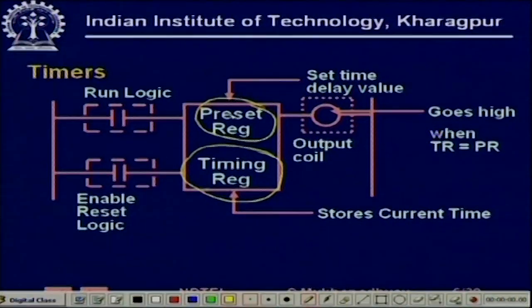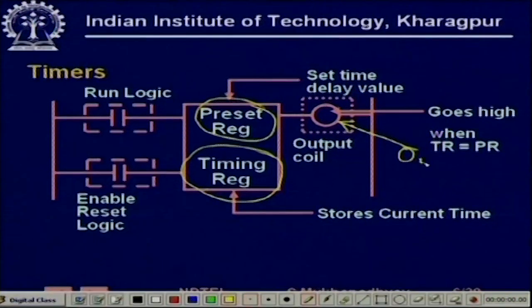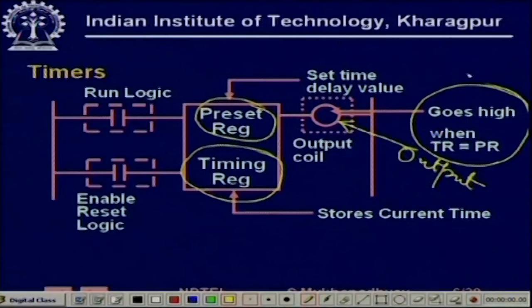The timer does not require any external clock — though counters, as we shall see, work on an external clock. The timing pulses come from the internal clock, so the timing register keeps increasing. There is a continuous comparison between the timing register and the preset register. After some time, the timing register value will exceed the preset register value, at which point the timer stops timing further — the timing register stops incrementing — and the output is asserted. So the output is asserted when the timing register equals the preset register.